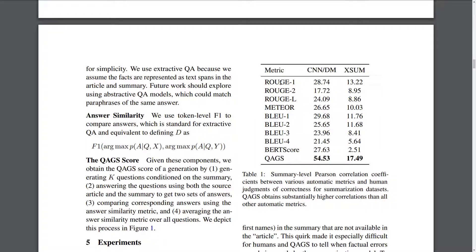Basically what they find is that the QAGS method correlates much more strongly with the human judgments of factual correctness in comparison to the ROUGE evaluation methods which are based on n-gram overlap.